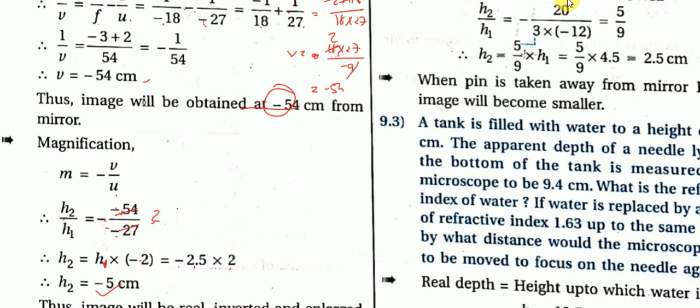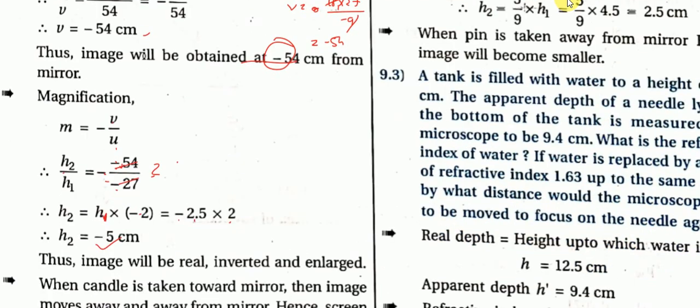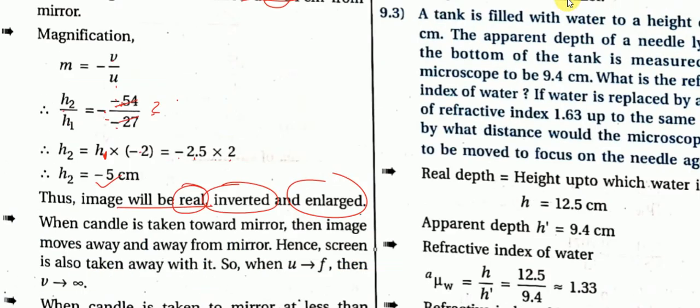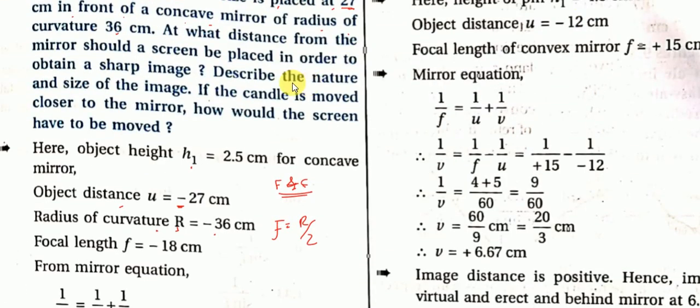Magnification is negative, meaning the image is inverted. An inverted image is always a real image. So the image is real and inverted, inverted and enlarged. The question asked: describe the nature, size, and position of the image.